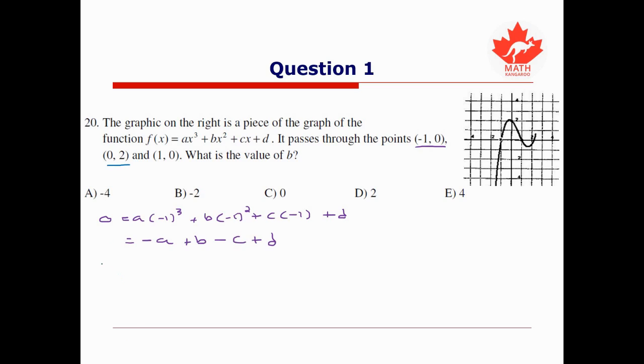Plugging in the second point (0, 2), on the left hand side we get 2, and if we're going to plug zero in for x, each of these terms involving x will vanish, and we're simply left with d = 2. Thus our equation above simplifies to 0 = -a + b - c + 2.